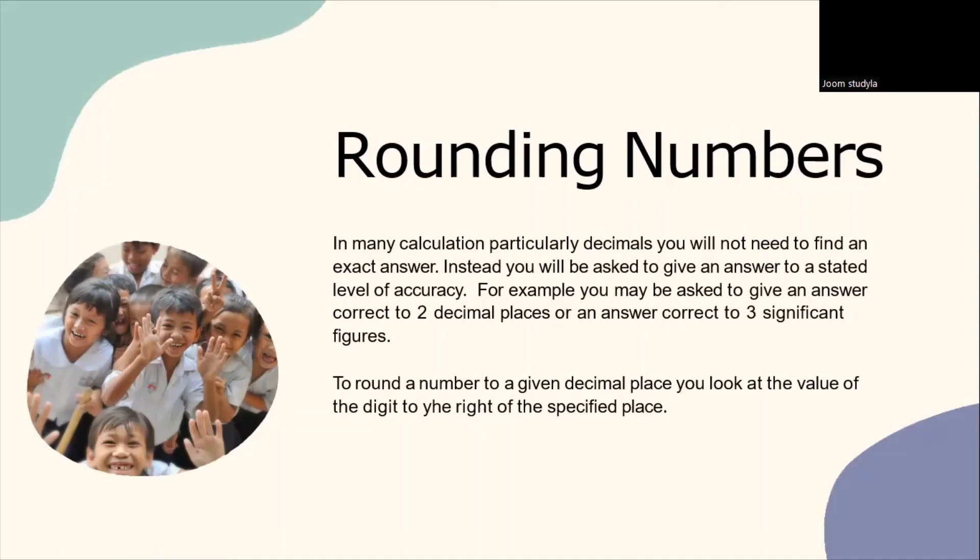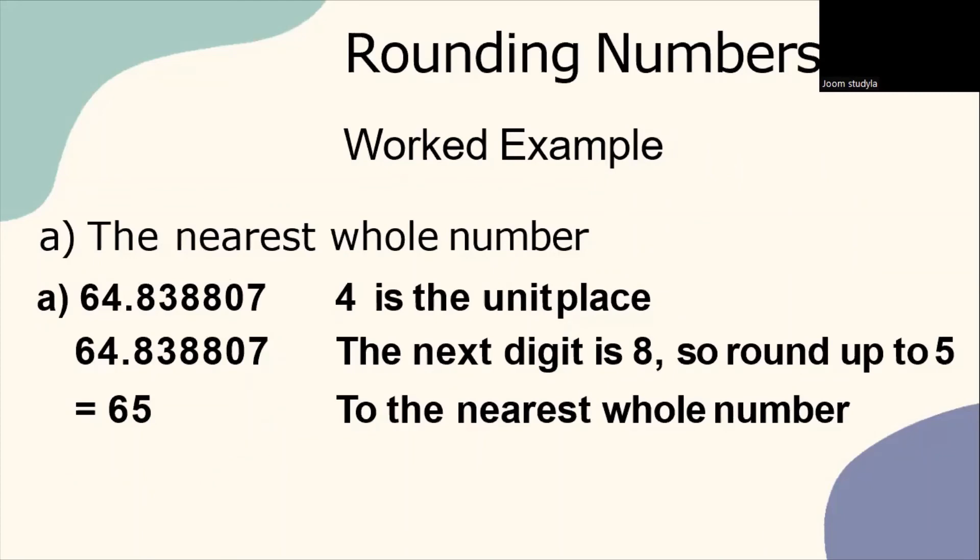Example given. The question asks for you to round the number to the nearest whole number. The question given is, the number is 64.838807, whereby 8 is the digit next to the decimal point.